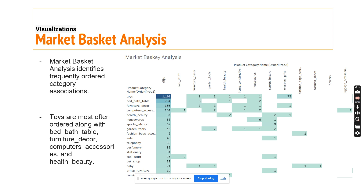Hi, I'm Snehil Tewari and I'll guide you through our market basket analysis and some insights from the visualizations. We have identified frequently ordered category associations. Toys are most often ordered along with bed bath table, furniture or computer accessories, and health beauty.